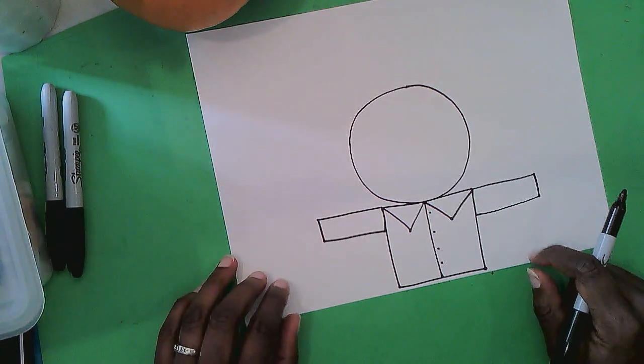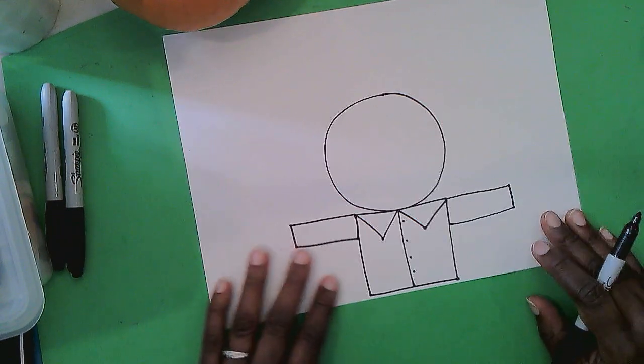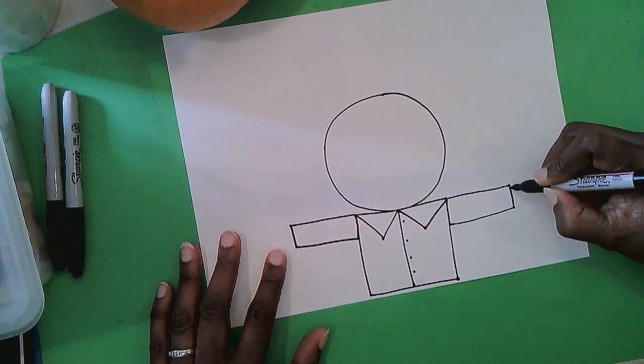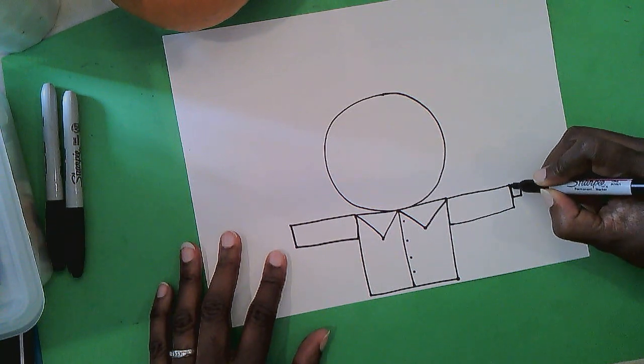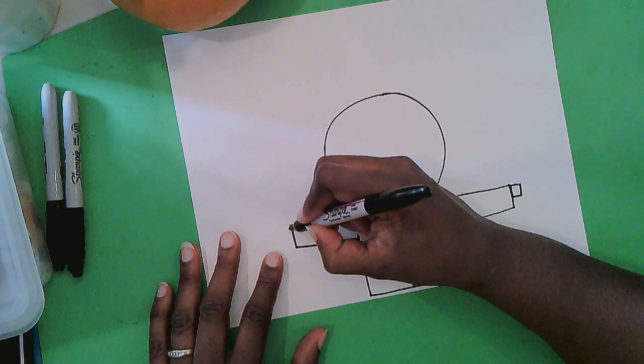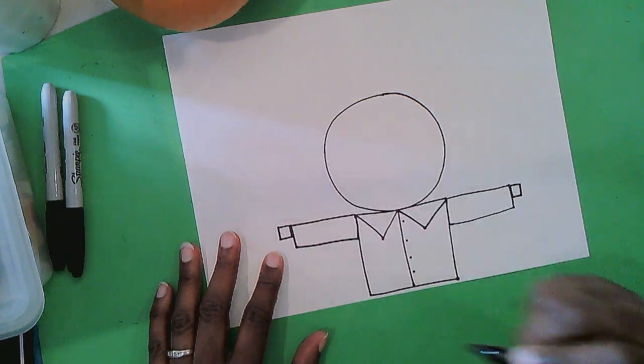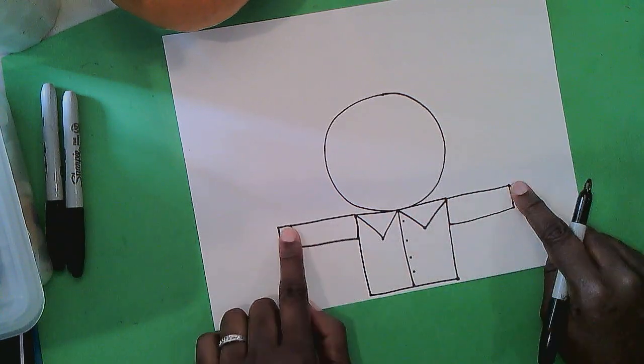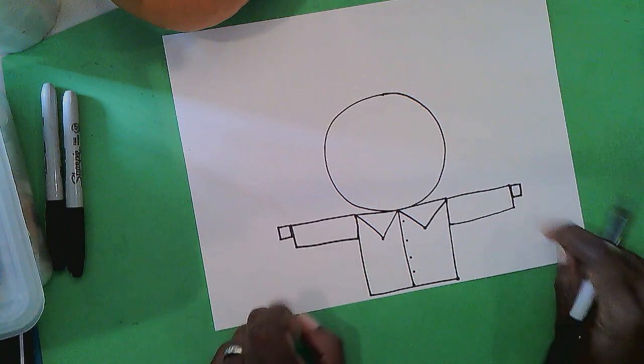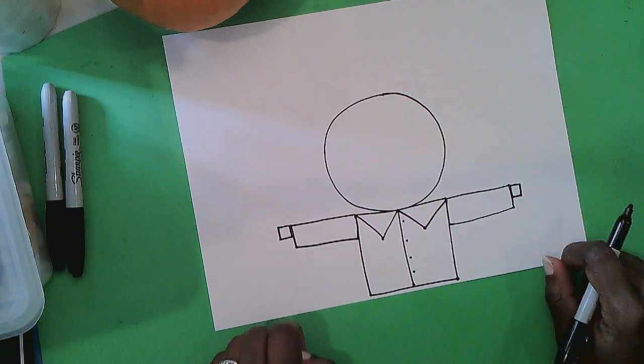Okay so now that we've done the shirt and the sleeves, add a small square at the top of that rectangle. Add a small square at the top of that rectangle. That right there is that stick that's inside that keeps the shirt straight up like that. And it's sticking out on both ends so we'll use a little square for that.